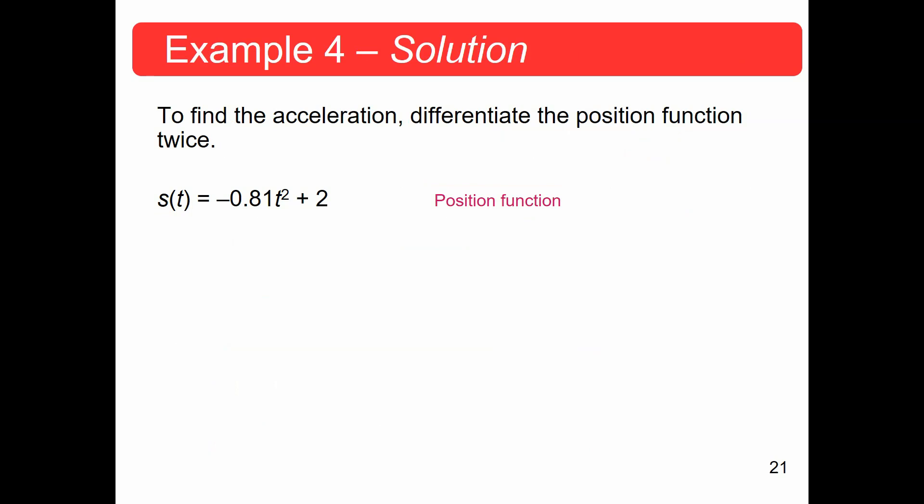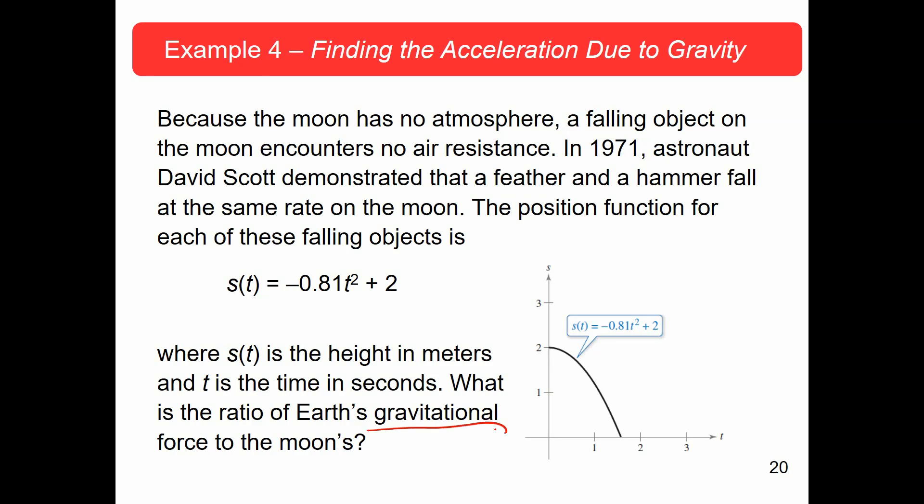So, to find the acceleration, we need to differentiate the position function twice because what is gravitational force? We talked about this in the previous, the G is acceleration. Gravity is an acceleration. So, we know Earth's gravity. I hope we know Earth's gravity. We talked about it in class. G is equal to 32 feet per second squared or 9.8 meters per second squared. Since we're talking about meters here, we're going to use the 9.8 meters per second squared.